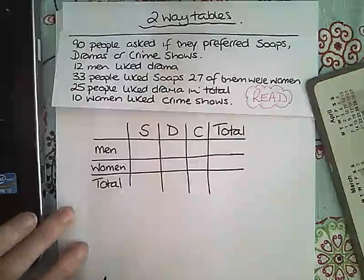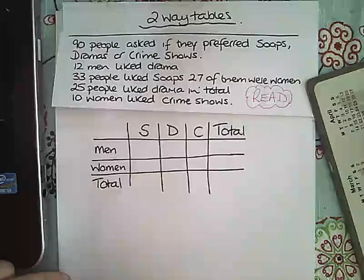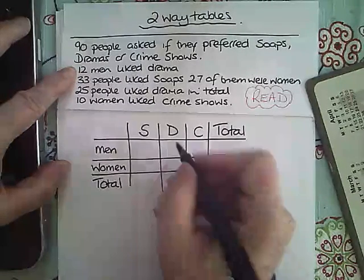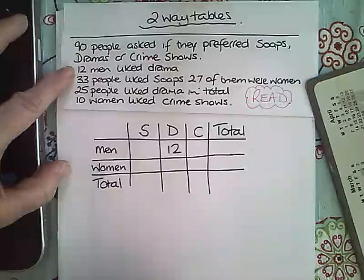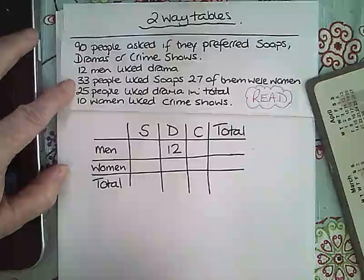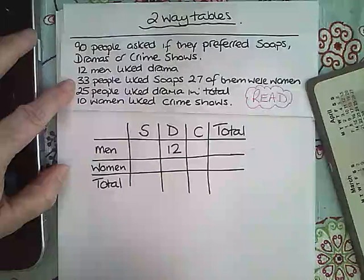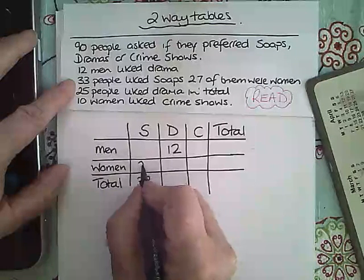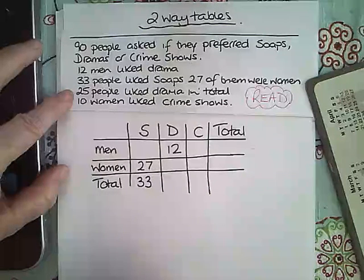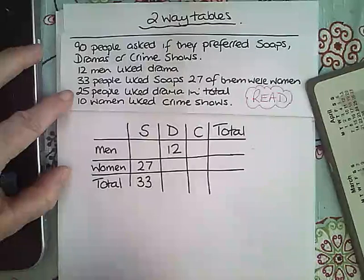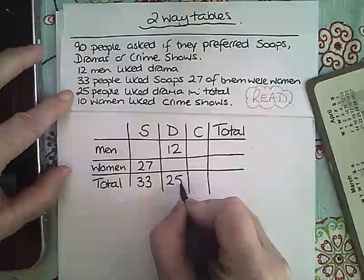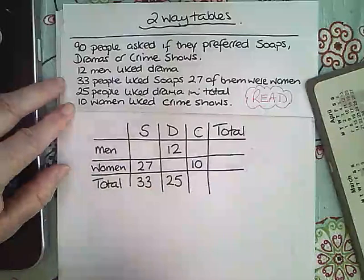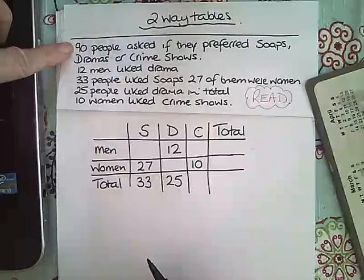Then I am going to put in the information I have been given. First of all, 12 men liked drama, so men and drama — the number 12 goes there. The second piece of information says 33 people liked soaps and 27 of them were women, so 33 is the total for soaps and 27 were women. It then says 25 people liked drama in total, so drama total is 25. And 10 women liked crime shows, so crime and women is 10. I've also got the total number of people, which was 90, so I'm just going to add that in there.